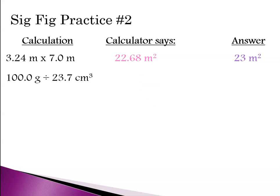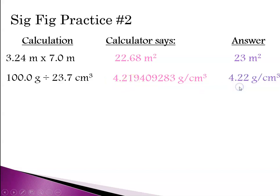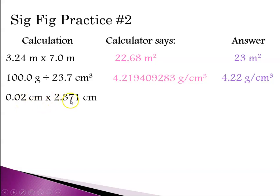Here we have a division problem. The calculator gives us a long decimal. With 4 versus 3 sig figs, we round to 3 sig figs. The 1 needs to be rounded up, so the answer is 4.22. In the next problem, we have 1 sig fig versus 4 sig figs. The calculator gives 4 digits, but we look at just the 1 significant digit. It gets rounded up, so the answer is 0.05. Leading zeros are not significant.